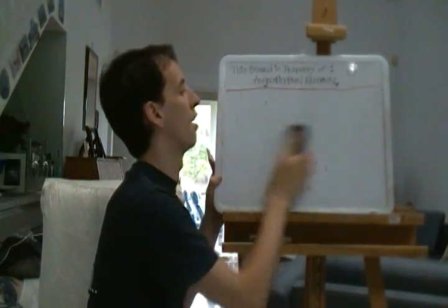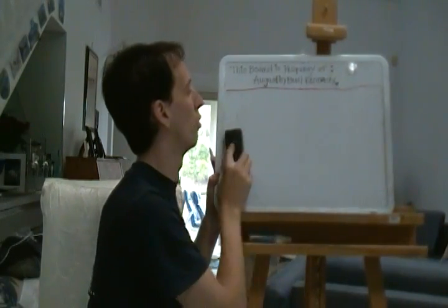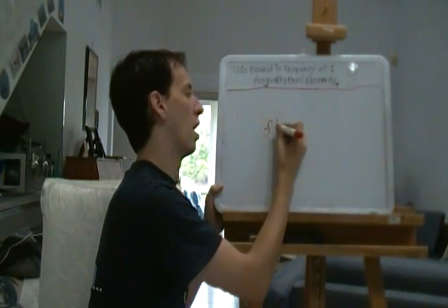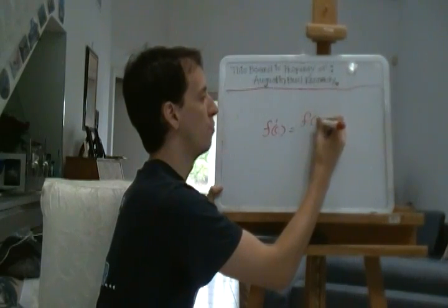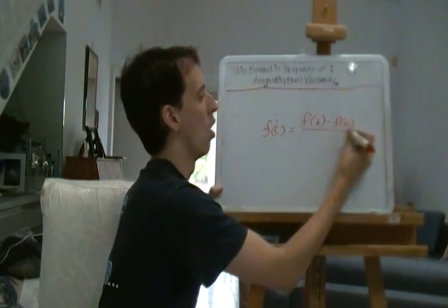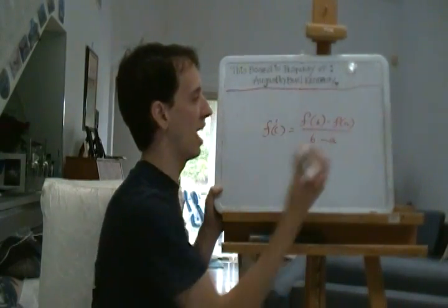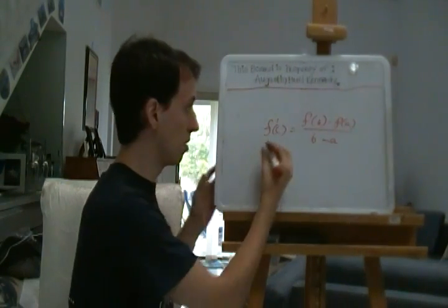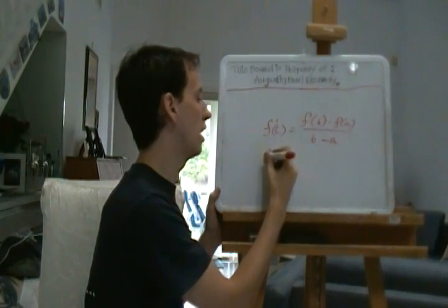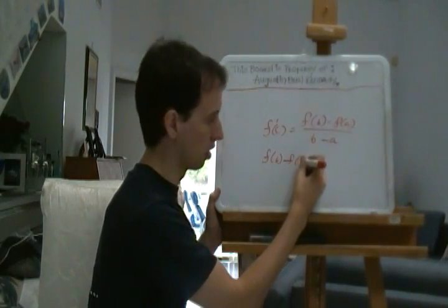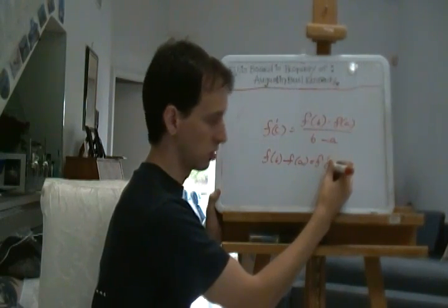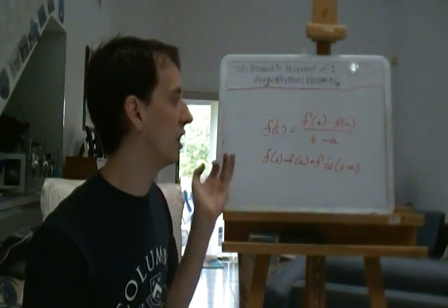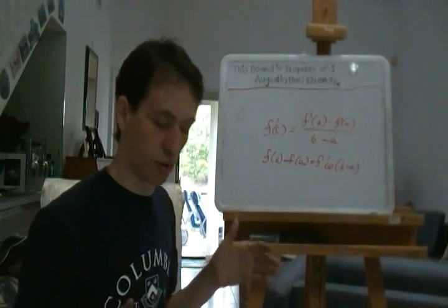Another way that you can write the mean value theorem. If you want to, when you're going to be using examples, you take f prime c equals f of b minus f of a over b minus a, okay? One thing that you can do is you can also use some algebra to manipulate it and say that f of b minus f of a equals f prime c times b minus a. Which really kind of, that really emphasizes what we're saying about the slope, right?